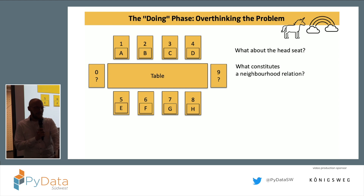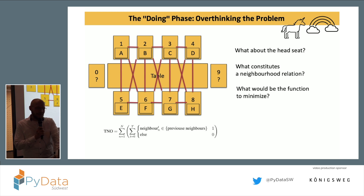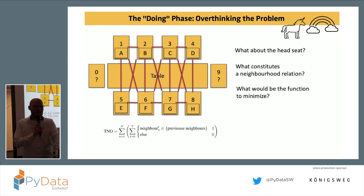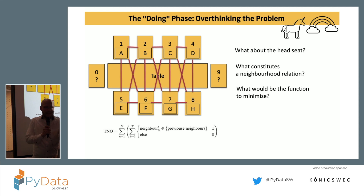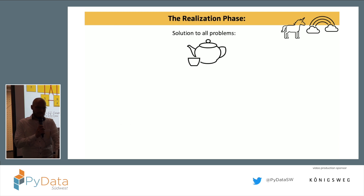I was wondering: do we care for the head seats? I inquired. The answer is no — we don't do head seats. Then I was wondering what actually constitutes a neighborhood relationship. Is it only direct neighbors or diagonal neighbors? In the end we went for direct neighbors. Then: optimization problem — we need a function to optimize. Basically, if your neighbor has been your neighbor in one of the previous courses we assign a value of one, sum over all seats, sum over all time steps. And because this wasn't complicated enough, I started to wonder about optimization constraints, because every good optimization problem needs some constraints. And then I realized: it has to be a set of integers — a fixed set of integers which are mutually exclusive — and I had no idea how to do this.